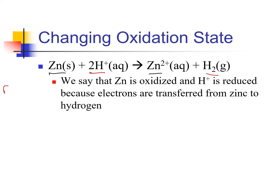Reduction is the gain of electrons. We see the hydrogen going from positive to neutral — to go from positive to neutral, it had to gain electrons. Since it gained electrons, those electrons have to come from somewhere. The zinc went from neutral to plus two; to go from neutral to plus two, it had to lose electrons. Losing electrons means it was oxidized, and the electrons are actually going from the zinc to the hydrogen.